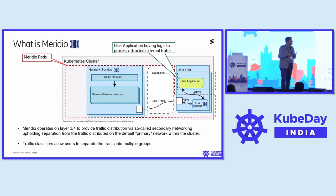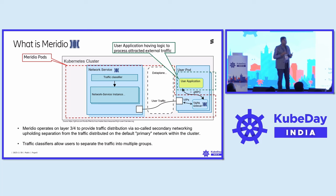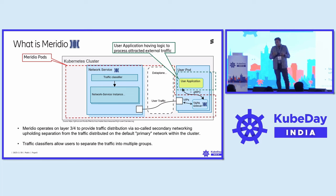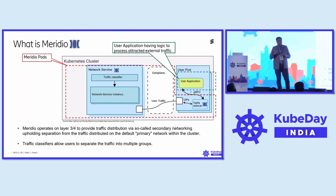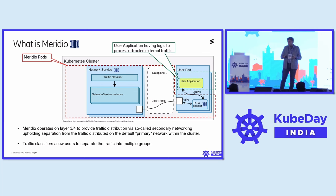There are more components to Meridio. The sidecar container talks to a network service that provides two functionalities: a traffic classifier and network service instances. Meridio operates on layer three to layer four to provide distribution via secondary networking. It supports traffic separation on the default primary network within the cluster — the primary network interface is not touched. It is the secondary interface through which all user-plane traffic passes. The traffic classifier can be used to separate user traffic into multiple groups.